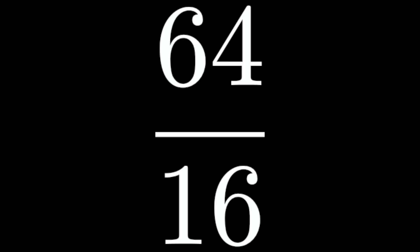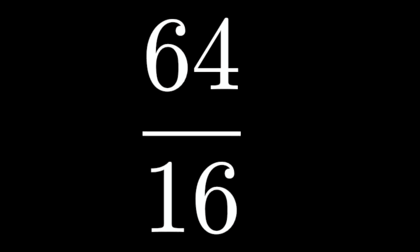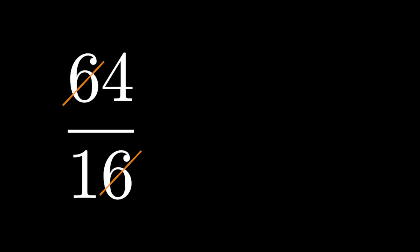64 over 16. All you have to do is cancel the sixes. You'll get 4 over 1, which is 4. This happens to be the correct answer.